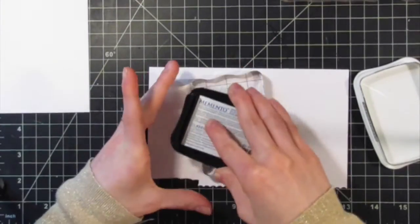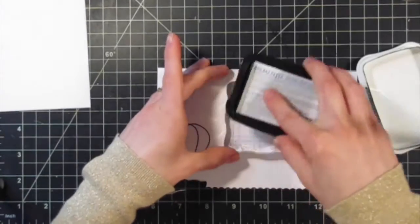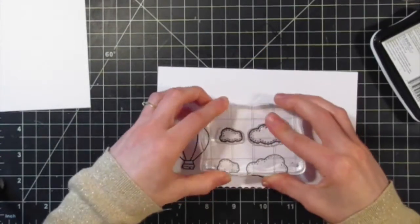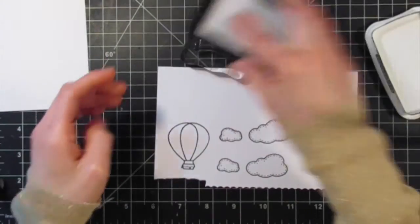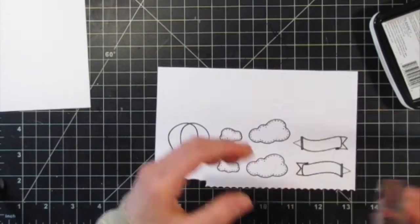Taking my Memento Tuxedo Black ink, I'm going to stamp all of these images on a piece of cardstock. This is 110-pound Neenah Solar White cardstock. Just stamping all my images and getting ready to color.